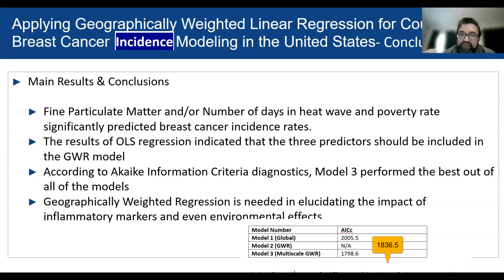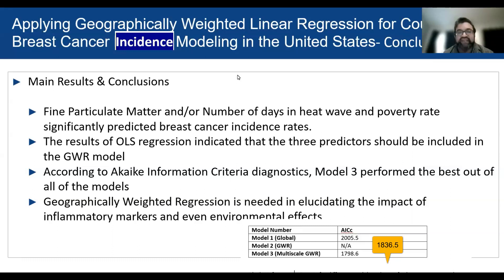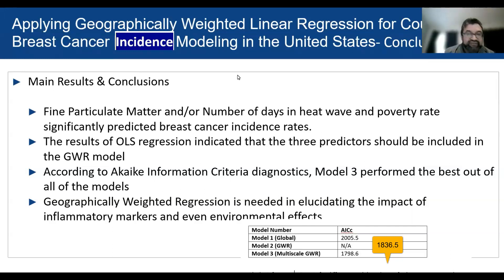What was more important is how well the model performed. I mentioned the Akaike information criteria — at the global scale, without geographically weighted considerations, the AIC value ended up being a little over 2000. The smaller the value, the better the model is fitting. Model two, using traditional geographically weighted regression, had an AIC of 1836.5. Model three, the multiscale geographically weighted regression, had an AIC of 1798.6 — definitely functioning better.